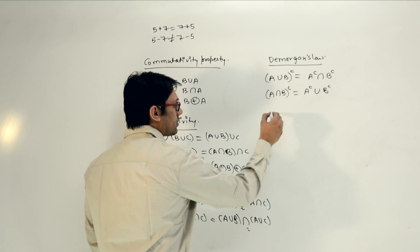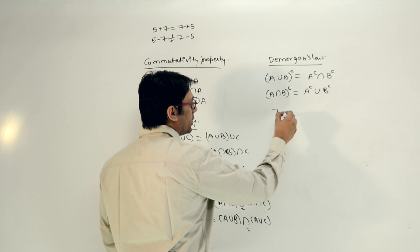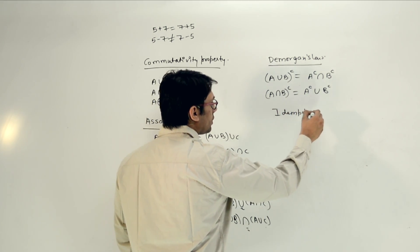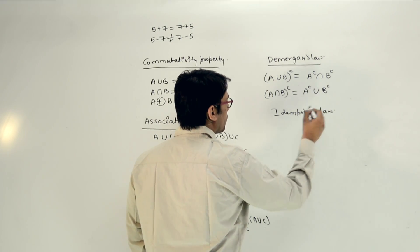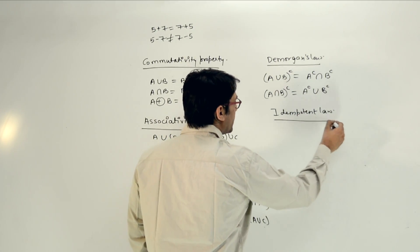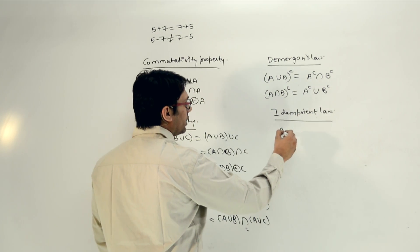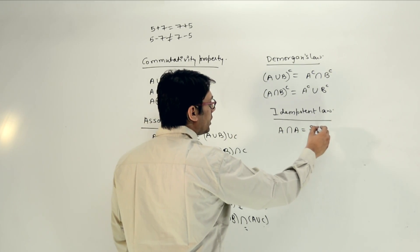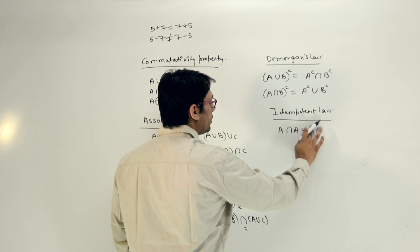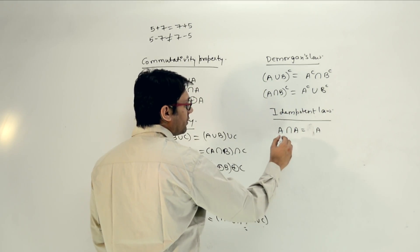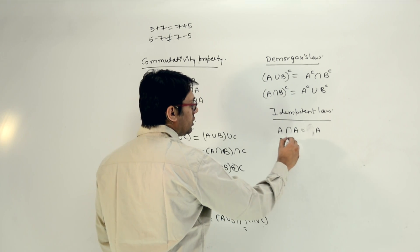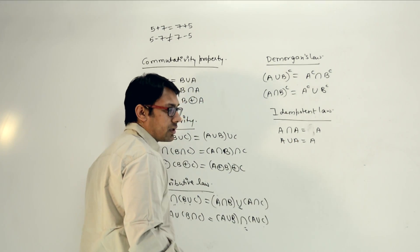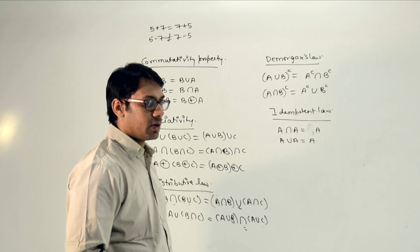The next property is called the idempotent law. If we do A intersection A, then you are going to get A. In the same way, if you do A union A, again you are going to get A. So this is called the idempotent law.